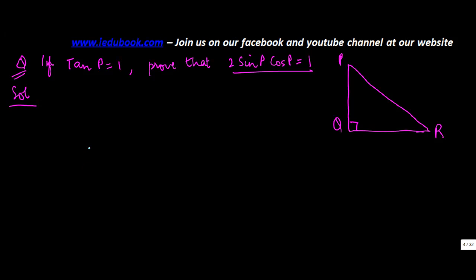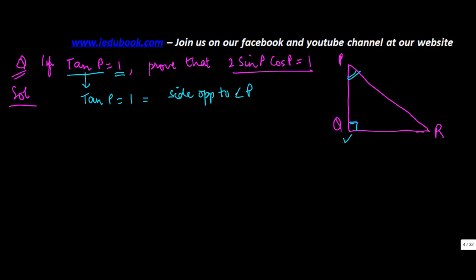The question says: if tan P is equal to 1 in the attached right angle triangle, where P is the given angle and the triangle is right-angled at Q, prove that 2 sin P cos P is equal to 1. We are told that tan P equals 1, which means the side opposite to angle P upon the side adjacent to angle P — that is QR upon PQ — is equal to 1.